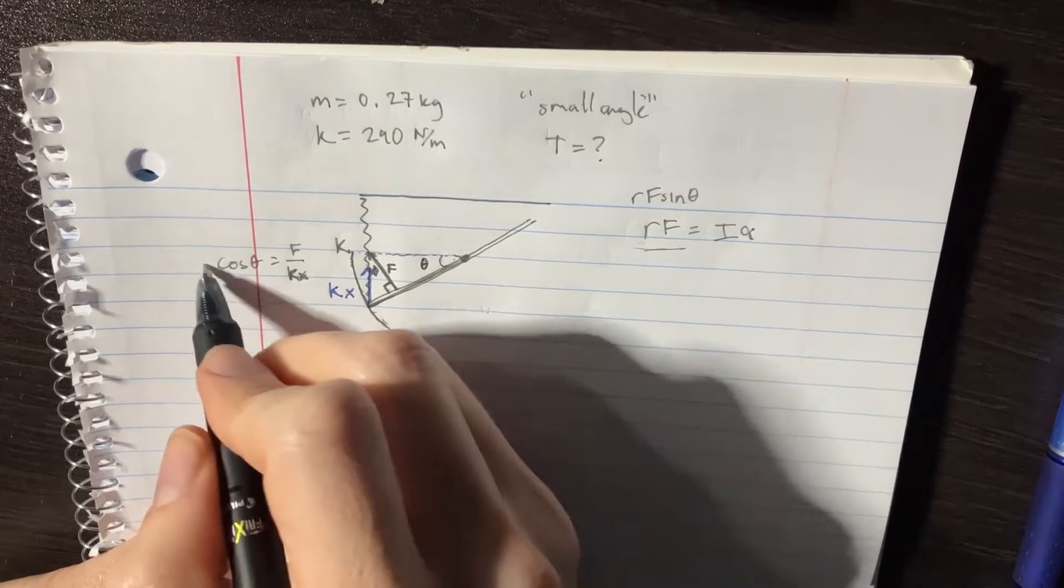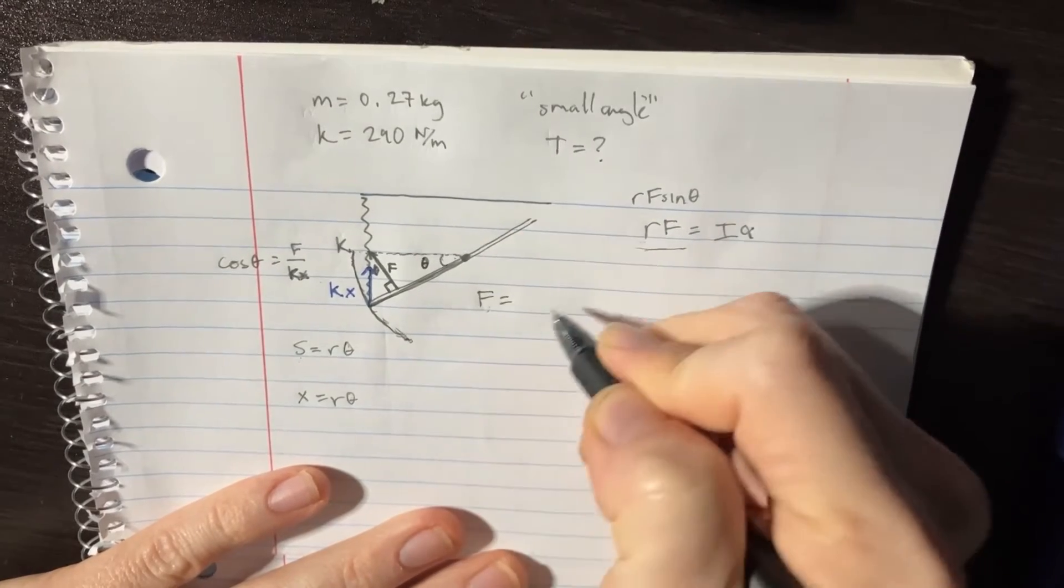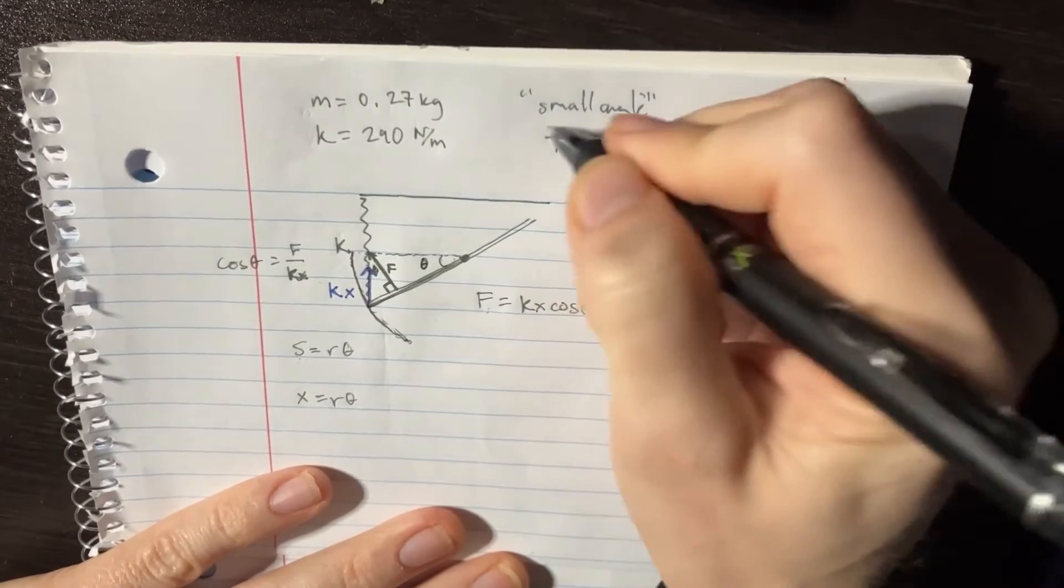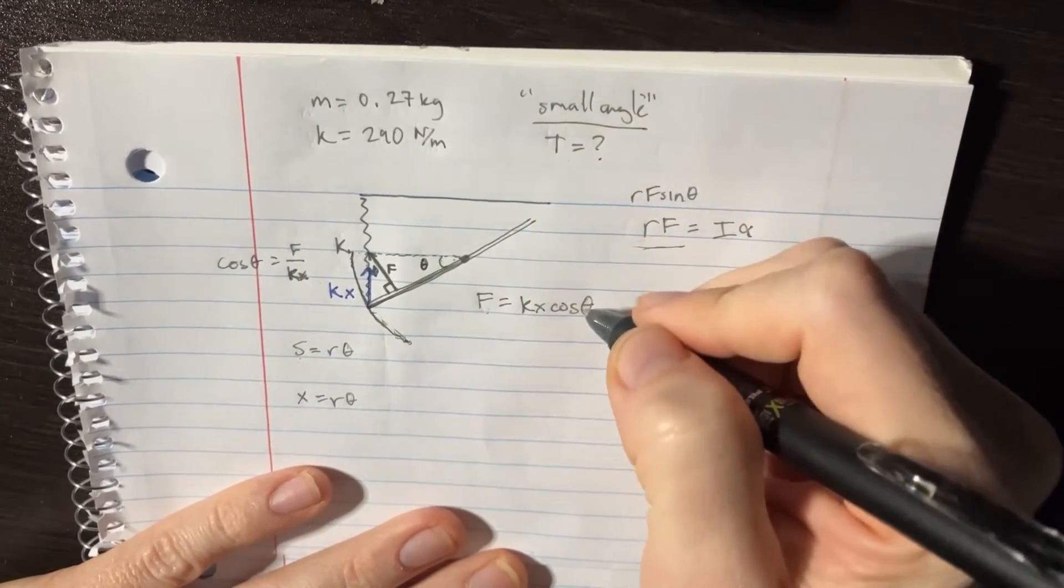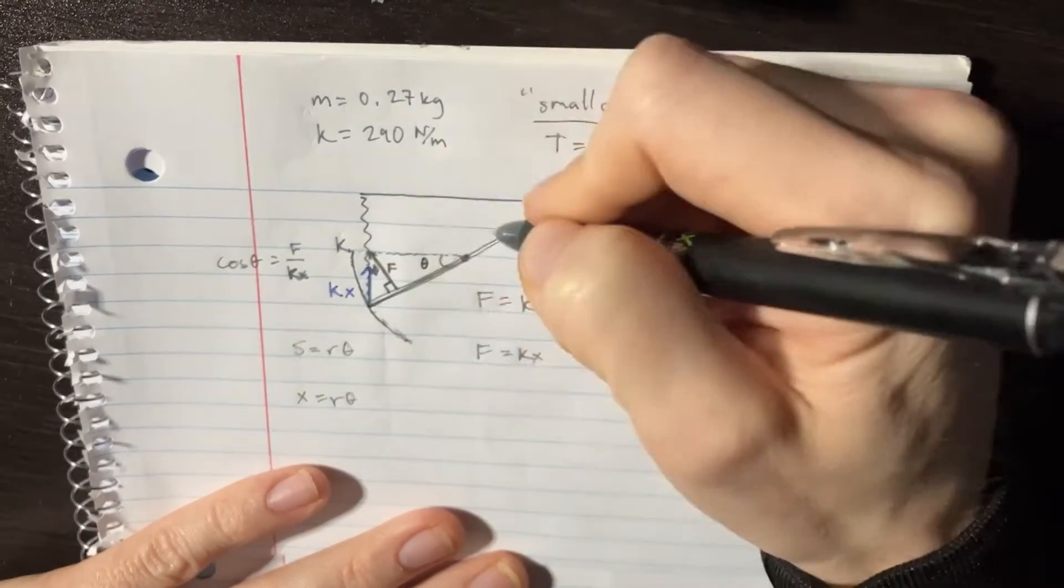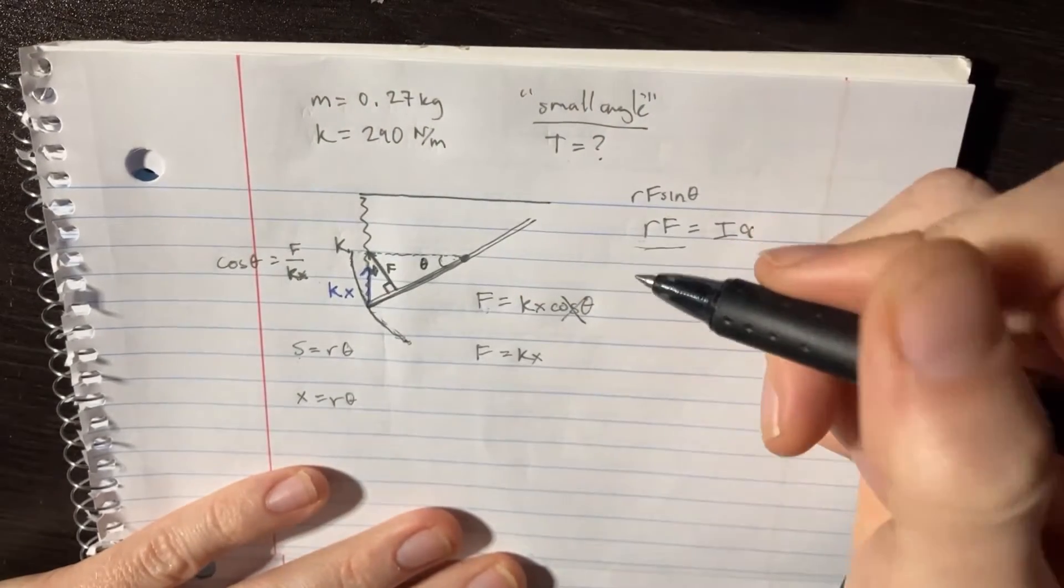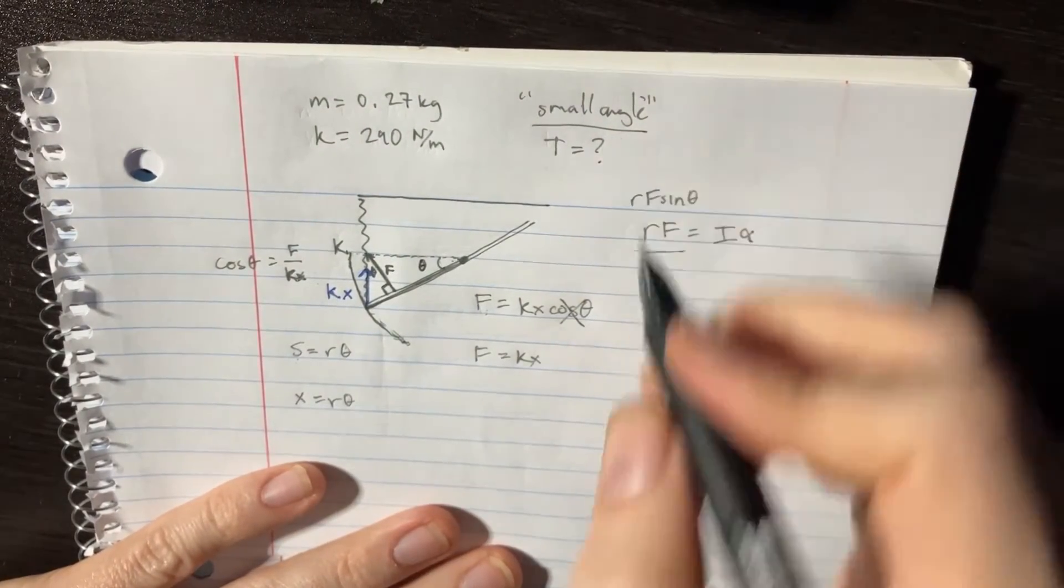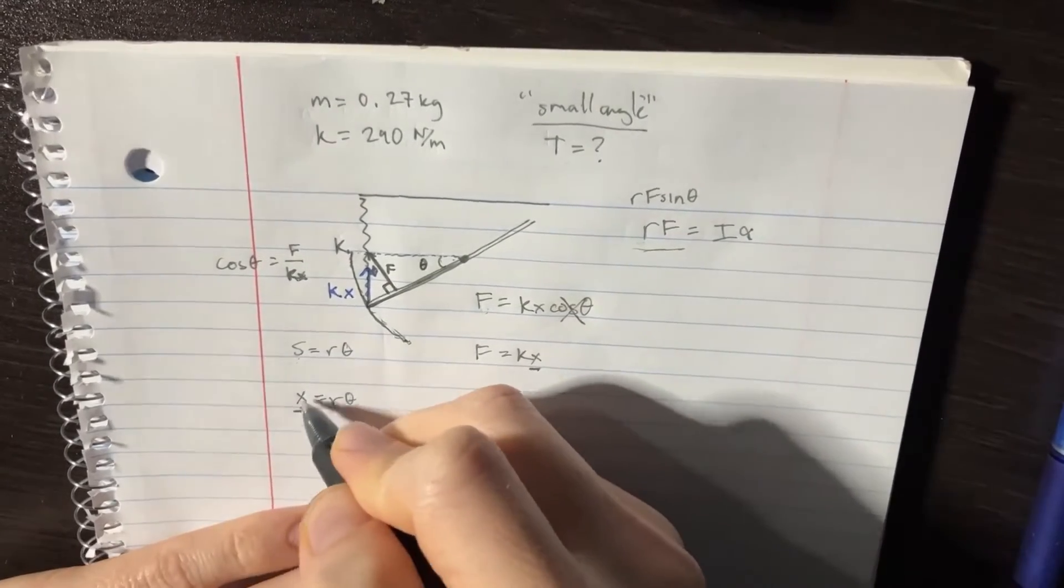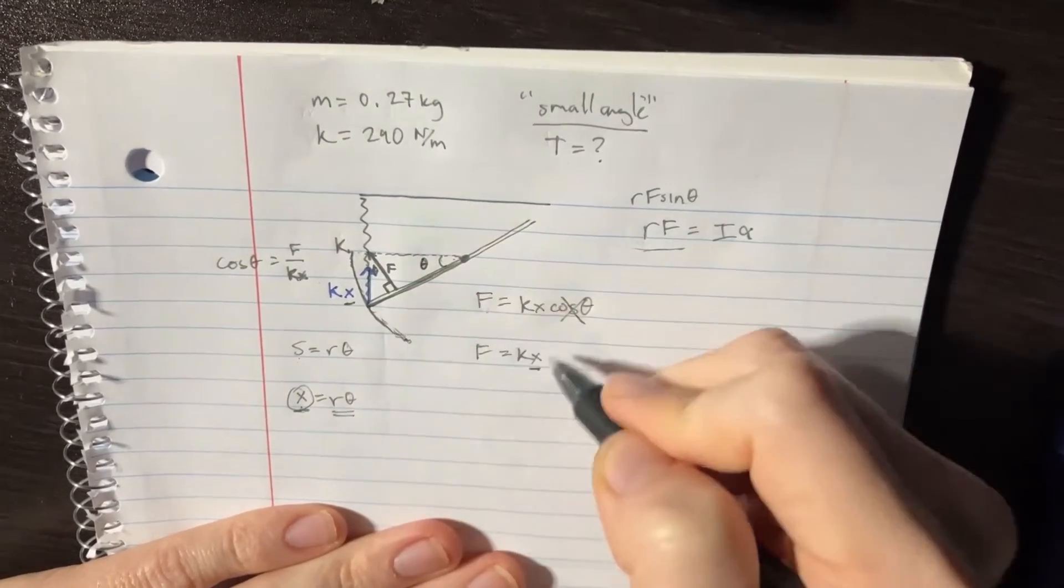And when we're using small angles, cosine theta will actually just simplify down to one, so F is really just equal to KX. Keep in mind though that X is actually equal to R theta - we're gonna have to plug that into this X value. I know it's a little bit complicated but just keep that in mind.